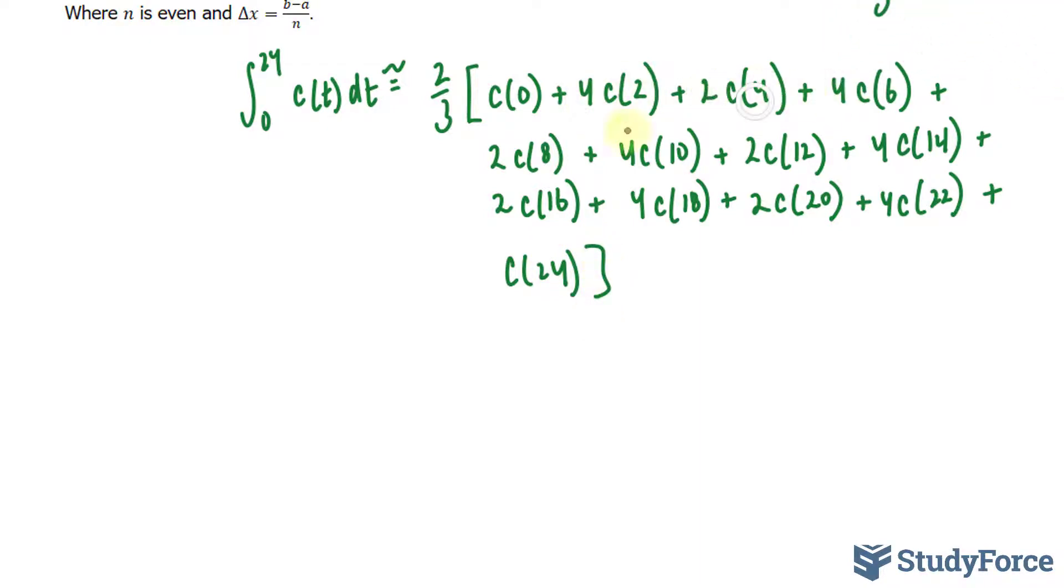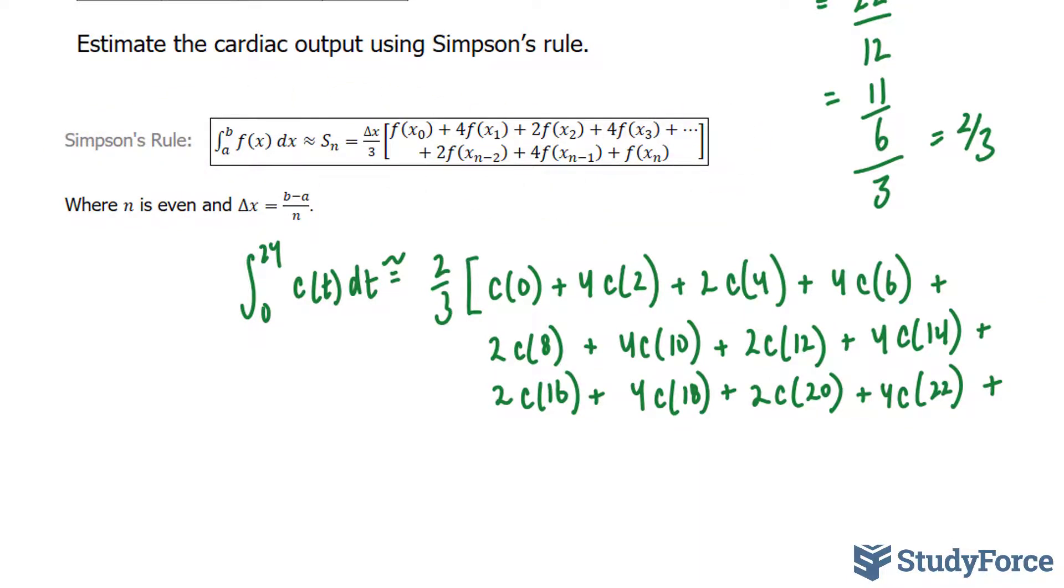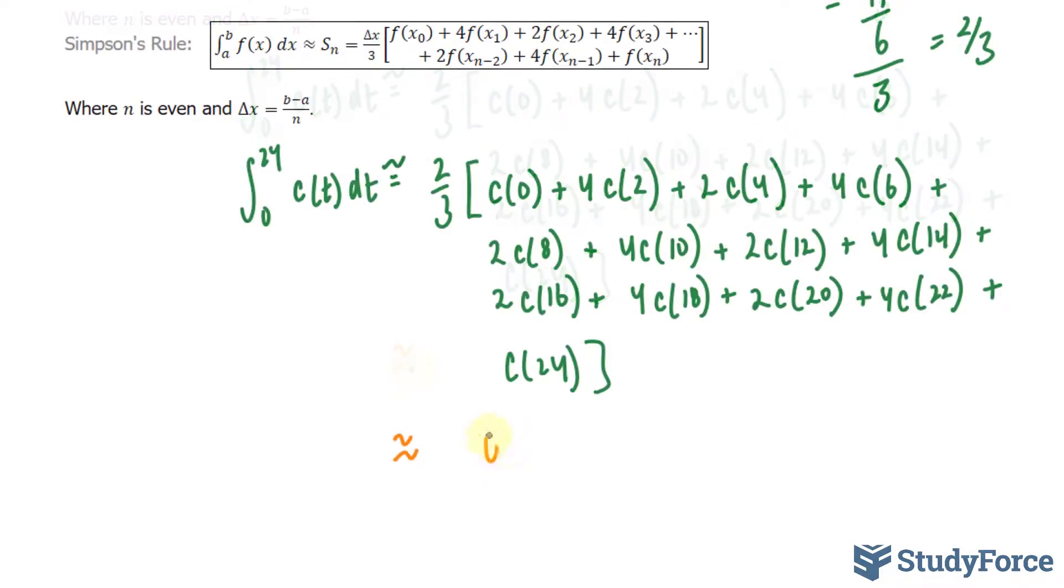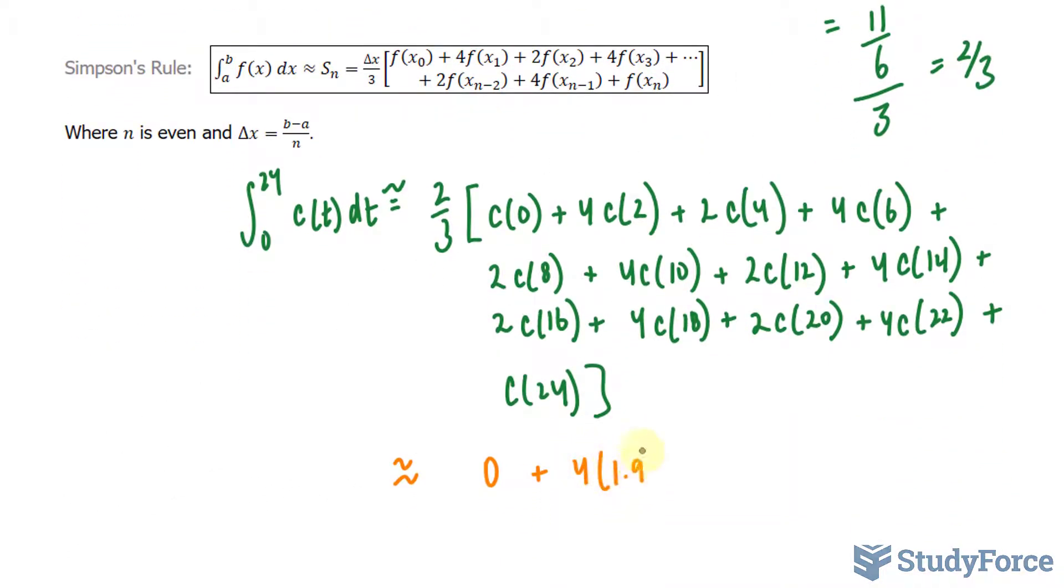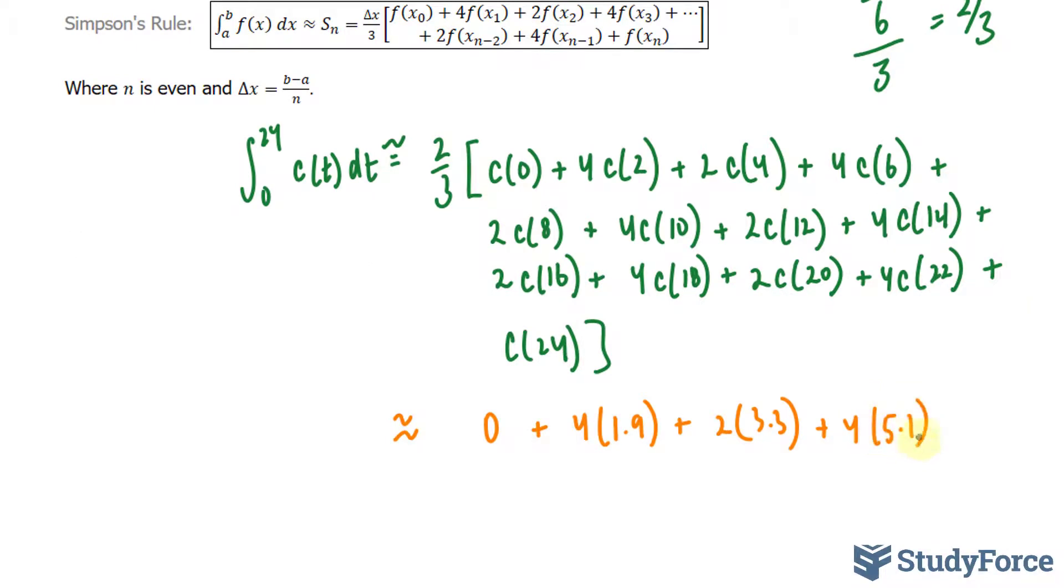Notice that we went from 4, 2, 4, 2 in this repeating pattern up until the very last term where it had no coefficient at the front, just as shown right here. Now the hard part: we have to evaluate all of these outputs shown here. So once again, we'll have to use the table and find out what the output at c(0) is, which is 0, plus 4 times 1.9, plus 2 times 3.3, plus 4 at c(6), which is 5.1. And we'll continue doing this, and if you write it out correctly, you should end up with the following expression.